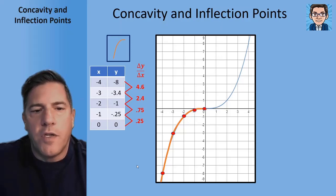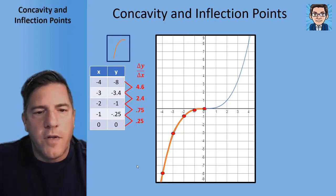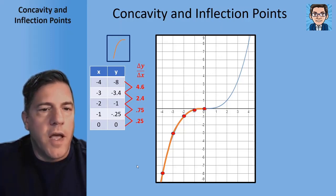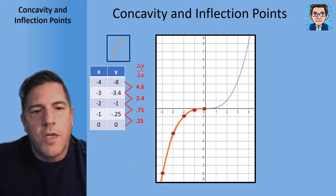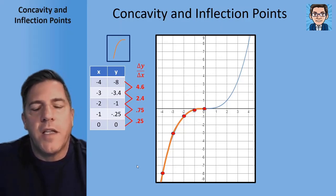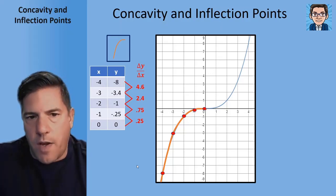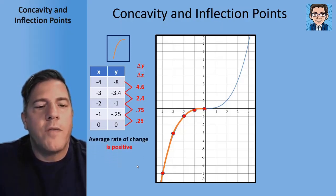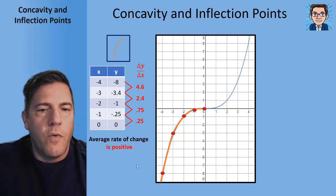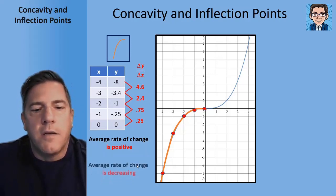The change in y over the change in x: the negative 8 and negative 3.4 has a difference of negative 4.6, and it also has an x change of negative 1. Notice that the change is positive. Each of these changes are positive, which makes sense because going left to right, our average rate of change increases. So the average rate of change here is positive, but notice that it's going down — from 4.6 down to 2.4 to 0.75 to 0.25. So the average rate of change is decreasing.